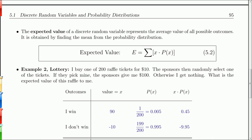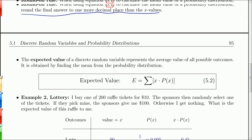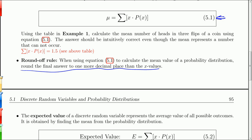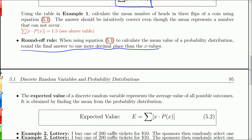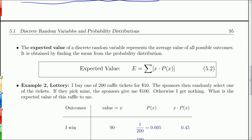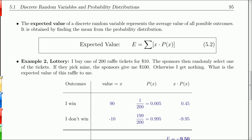The round off rule when using equation 5.1: you want to round the final answer to one more decimal place than the actual x values. The expected value of a discrete random variable is the sum of the x times p of x. The expected value is just another name for the mean. But in expected value, you think of it more in gambling, where there's some value associated with each outcome.